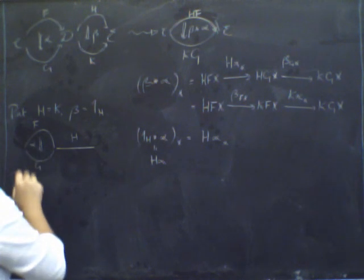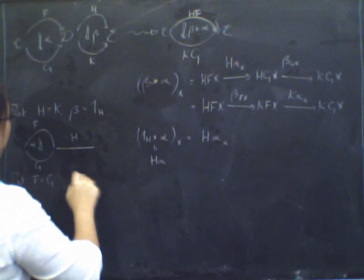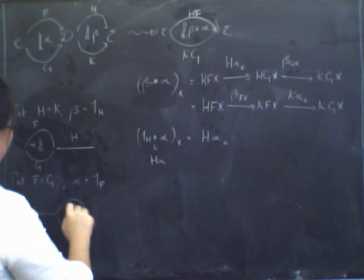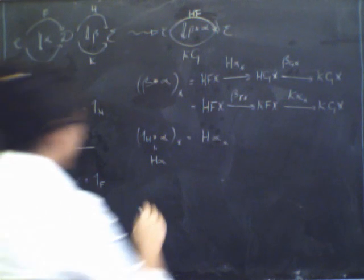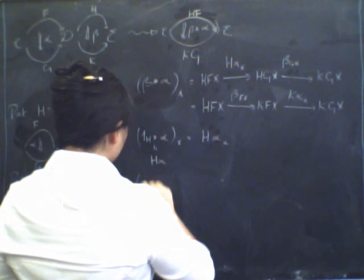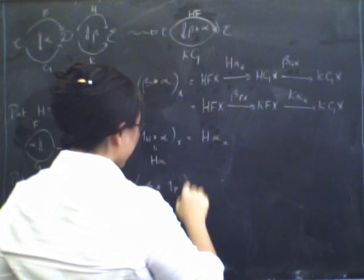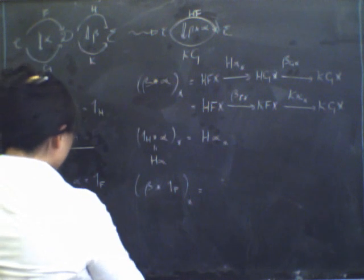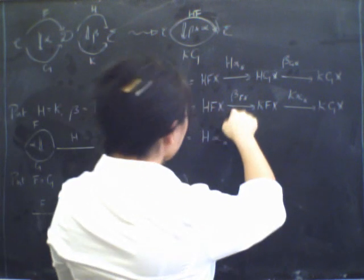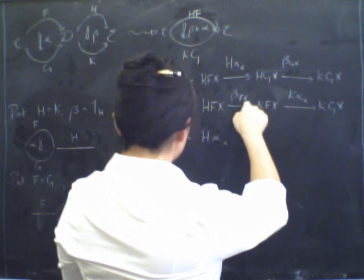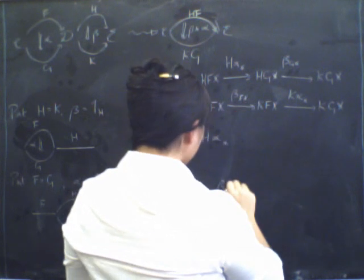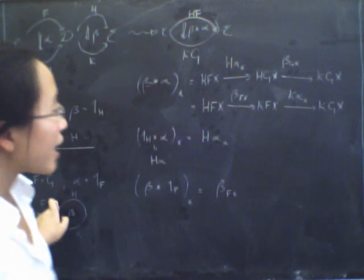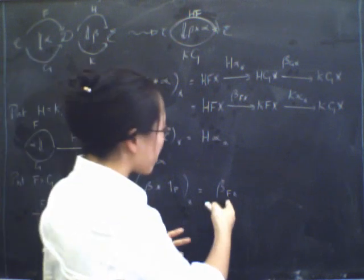Now let's try making the other side a flat bit. Let's put F equals G and put alpha to be the identity on F. So now we're looking at a flat bit over here. We've got beta here and just the identity on F over on the other side. Let's plug into the formula: beta star the identity on F, at its component of X. We get beta at the component F of X, composed with K of the identity. Now K of the identity is just the identity, so when we compose with that, that's all we get.